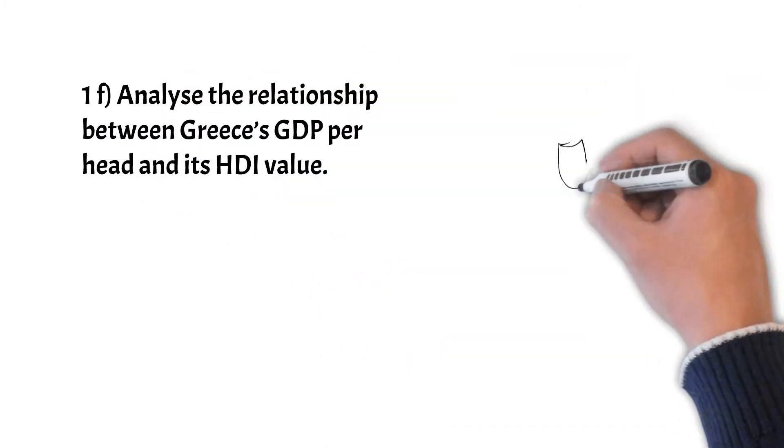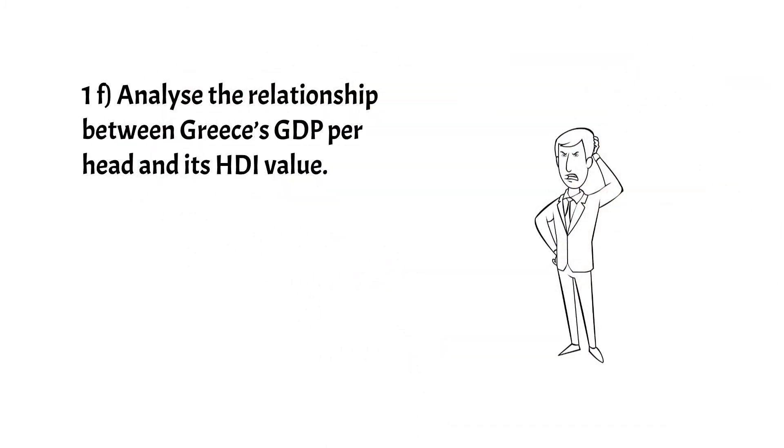Next, question 1f: analyze the relationship between Greece's GDP per head and its HDI value. Okay, they want us to explain the outcome of the relationship between these two variables. Greece's GDP per head has been falling from 2010 and 2015 but HDI has been increasing. This suggests a negative relationship between the data for GDP per head and the data for HDI value. This could be because of improving education and health care or other reasons. HDI consists of GDP per head, education and health. Hence, even though GDP per head is falling, this is more than offset by rising education and health.